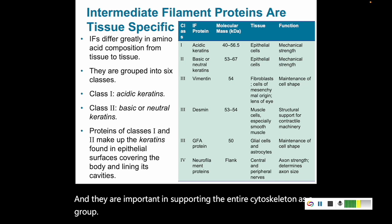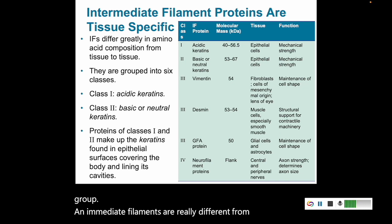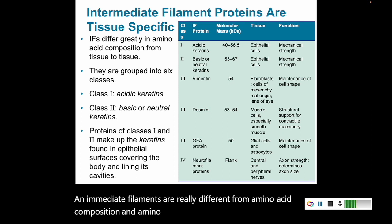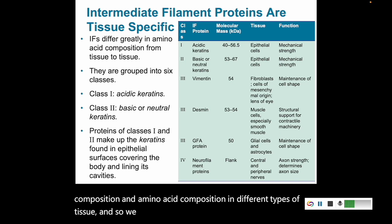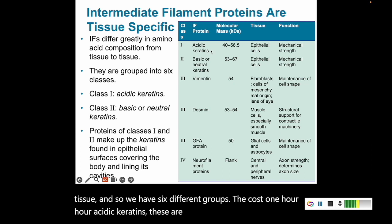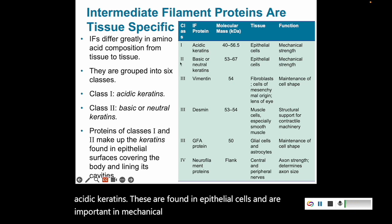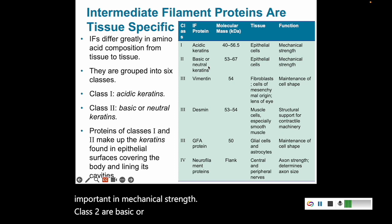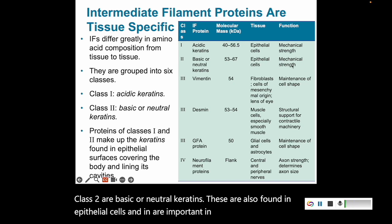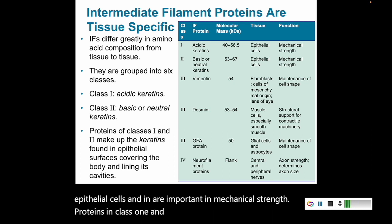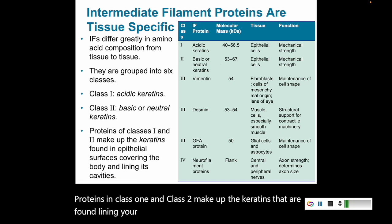Intermediate filaments really differ in amino acid composition in different types of tissue, and so we have six different groups. Class one are our acidic keratins — these are found in epithelial cells and are important in mechanical strength. Class two are our basic or neutral keratins — these are also found in epithelial cells and are important in mechanical strength. Proteins in class one and class two make up the keratins that are found lining and covering your body cavities and surfaces.